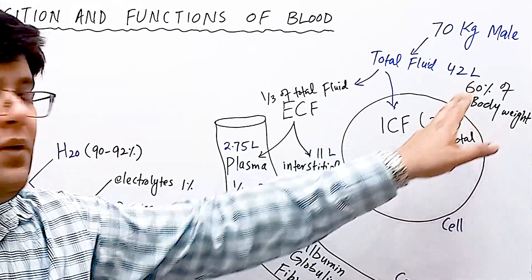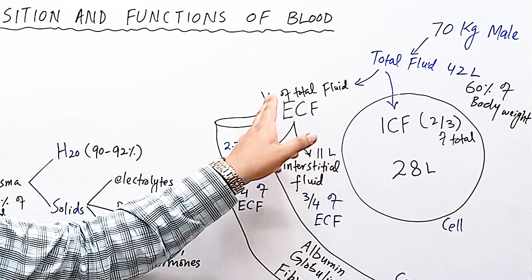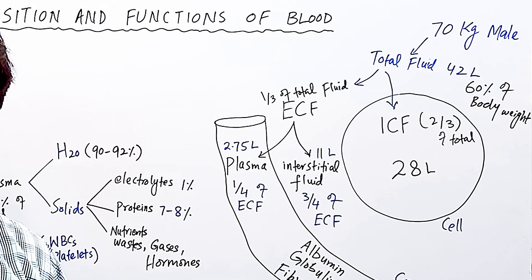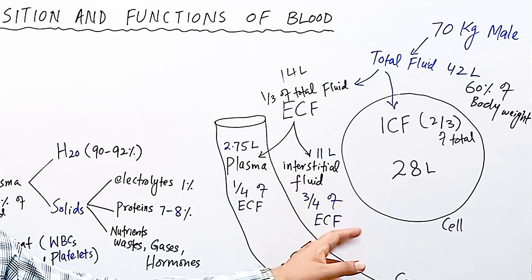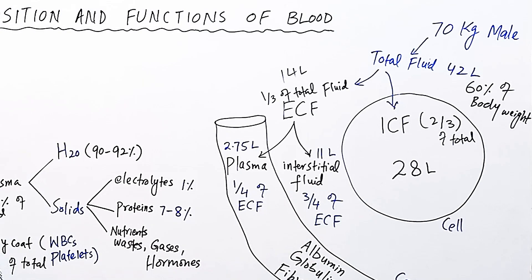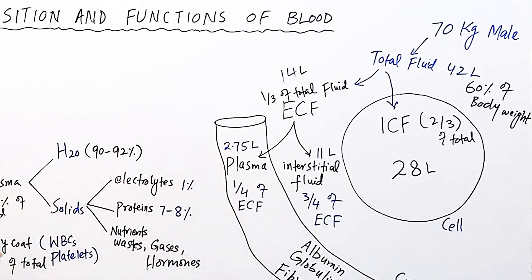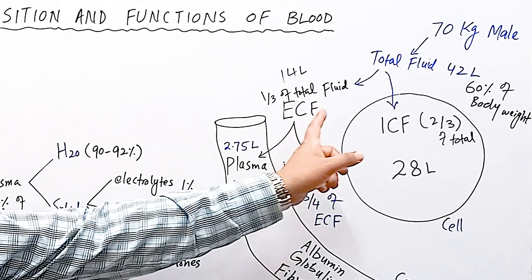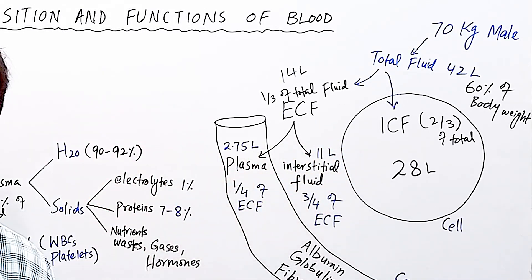Intracellular compartment is two-thirds of total body fluid which is 28 liters, and extracellular fluid compartment is one-third which is 14 liters. Three-quarters of extracellular fluid is made by interstitial fluid which is about 11 liters, and one-quarter of extracellular fluid is made by plasma. So plasma is actually a part of extracellular fluid, about 2.75 to 3 liters in volume.